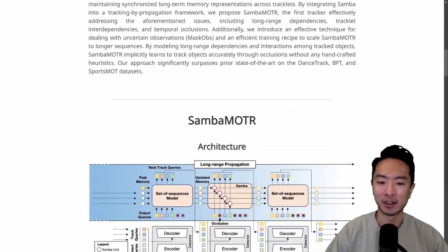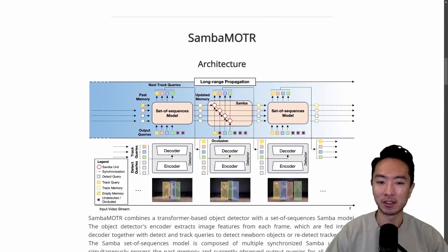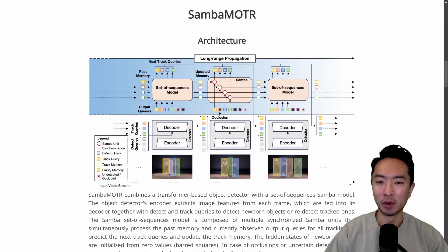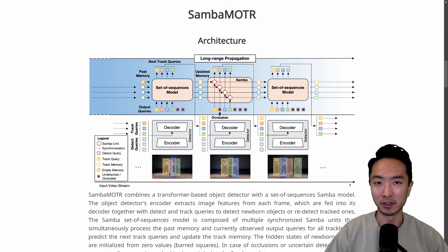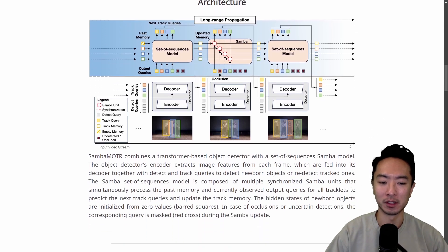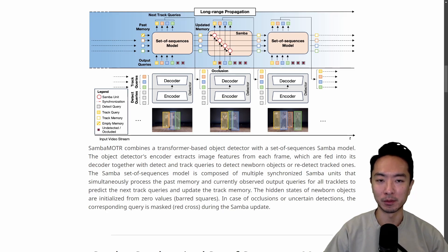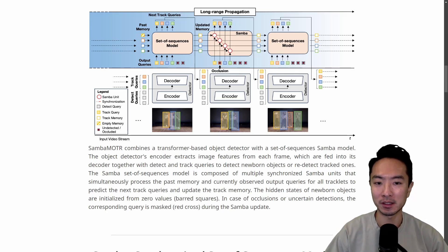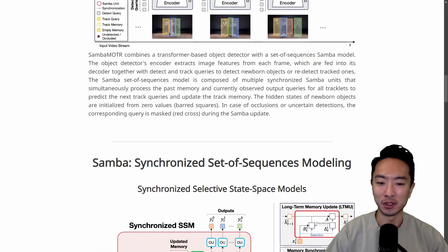Let's take a look at the architecture. One thing that's very unique to this is that it has memory — it actually predicts how the different objects are moving relative to each other and also as a function of time. It's kind of similar to the long short-term memory type of architecture. It's transformer-based, so it's very interesting.